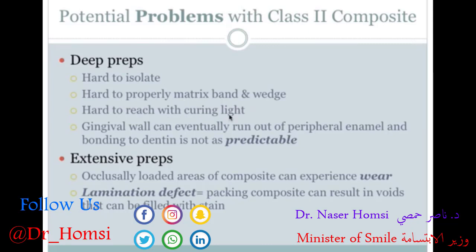It's also technically hard to reach with your curing light. The gingival wall can run out of enamel as you go deeper, leaving only dentin at the bottom — making bonding less predictable, since etching is not as effective with dentin as with enamel. In extensive preparations, you have more surface area, and occlusally loaded areas can experience wear. Packing composite also carries more risk of introducing voids.